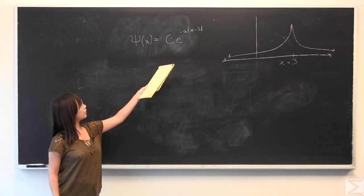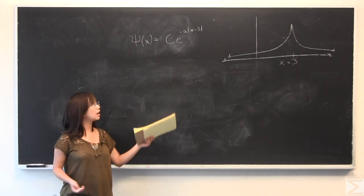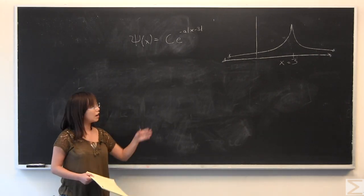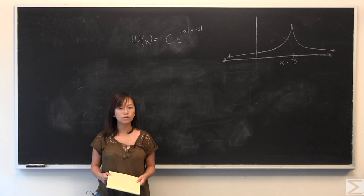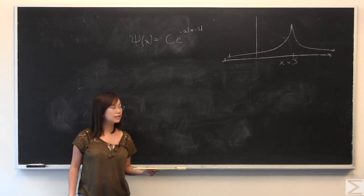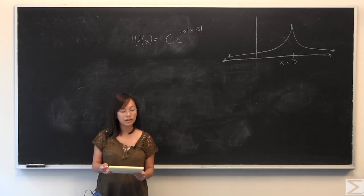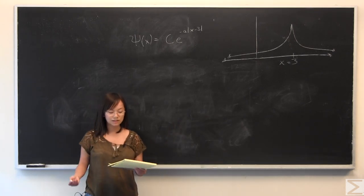You're given this wave function, psi of x is equal to c times e to the negative a absolute value of x minus 3. I have graphed this for you. You don't need to graph it in order to solve the problem, but I think it helps a lot intuitively with some of the things that you're asked.